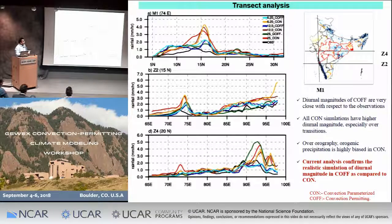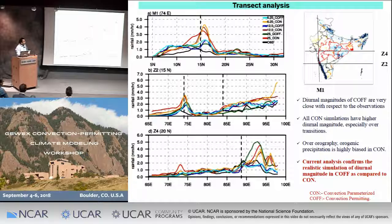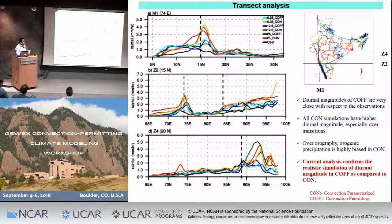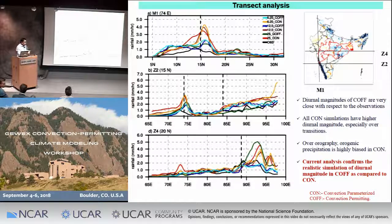Checking west-to-east transects, the ocean-to-land and land-to-ocean transitions are pretty well simulated in convection-off simulations. Over the central India transect at 20 degrees north, all simulations show fairly high diurnal peaks over the Bay of Bengal area, but convection-off with very high resolutions is much closer to observations. This again confirms the realistic simulation of diurnal magnitude in the convection-off experiments.